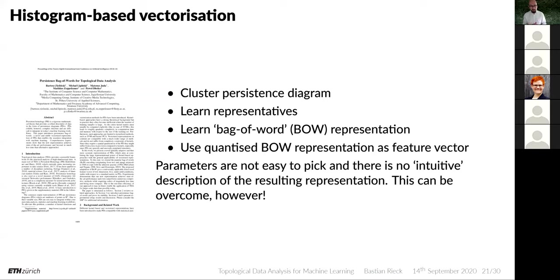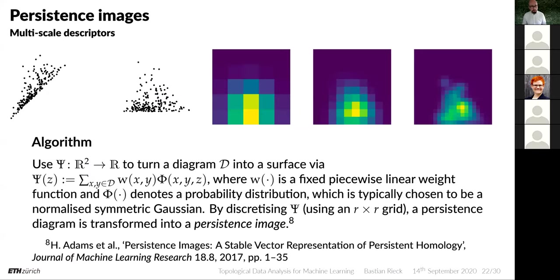There's also a histogram-based vectorization approach: take the persistence diagram, cluster it, learn representatives of each region, and use a bag-of-words representation as a feature vector. This works well and the authors have smart techniques, but parameters are not as easy to pick because there's no intuitive description of the resulting representation — unlike the persistence landscape where you have an intuitive hierarchical view.